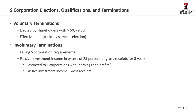There are also involuntary terminations, and generally speaking that's if you fail the S-corp requirements. For example, should a foreign shareholder become one of the shareholders, you fail. Should you get to 101 shareholders, you're no longer eligible — that's an involuntary termination. And then in order to avoid tax avoidance schemes, you can't have more than 25% of your gross receipts come from passive income. That's basically trying to prevent structuring an investment corporation inside of an S-corp, and it's just not permitted.